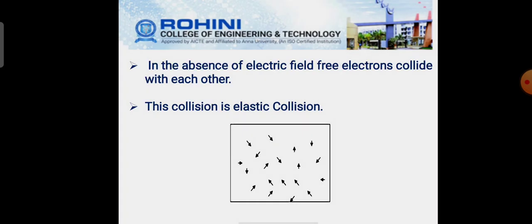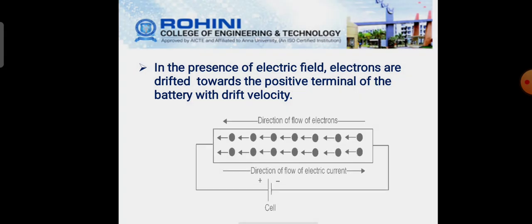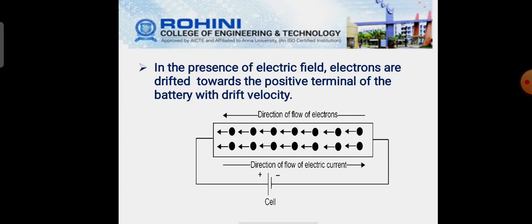Third one is, in the absence of electric field, free electrons collide with each other. This collision is elastic collision. In the presence of electric field, electrons are drifted towards the positive terminal of the battery with the drift velocity. Here, see this diagram. The electrons are directed towards the positive terminal of the battery. This diagram shows the direction of flow of electrons which is towards the positive terminal of the battery.